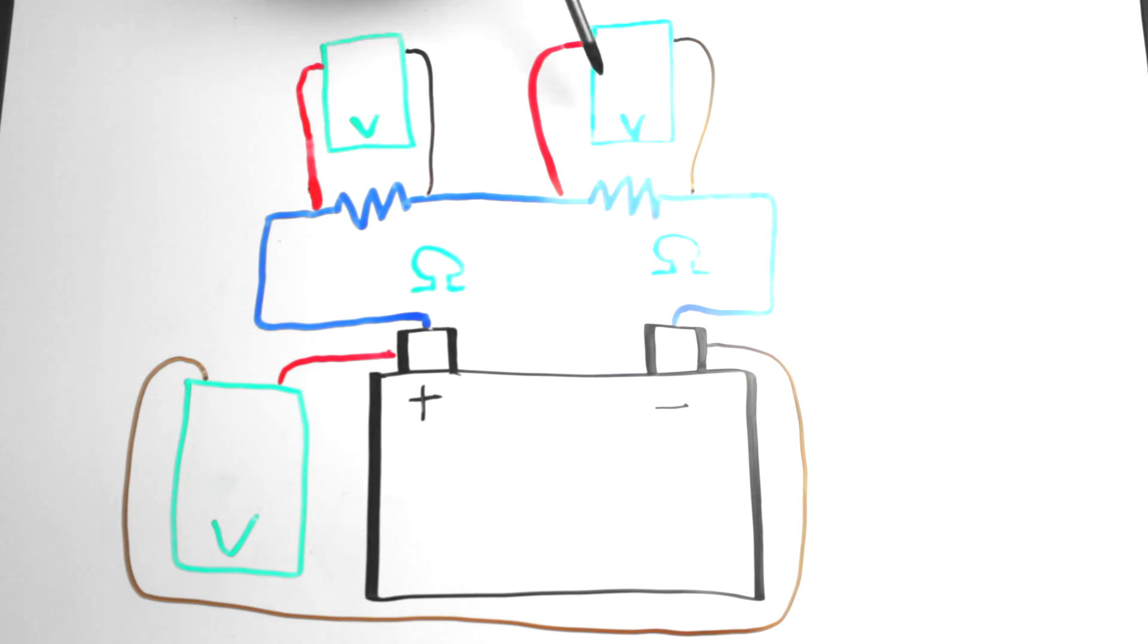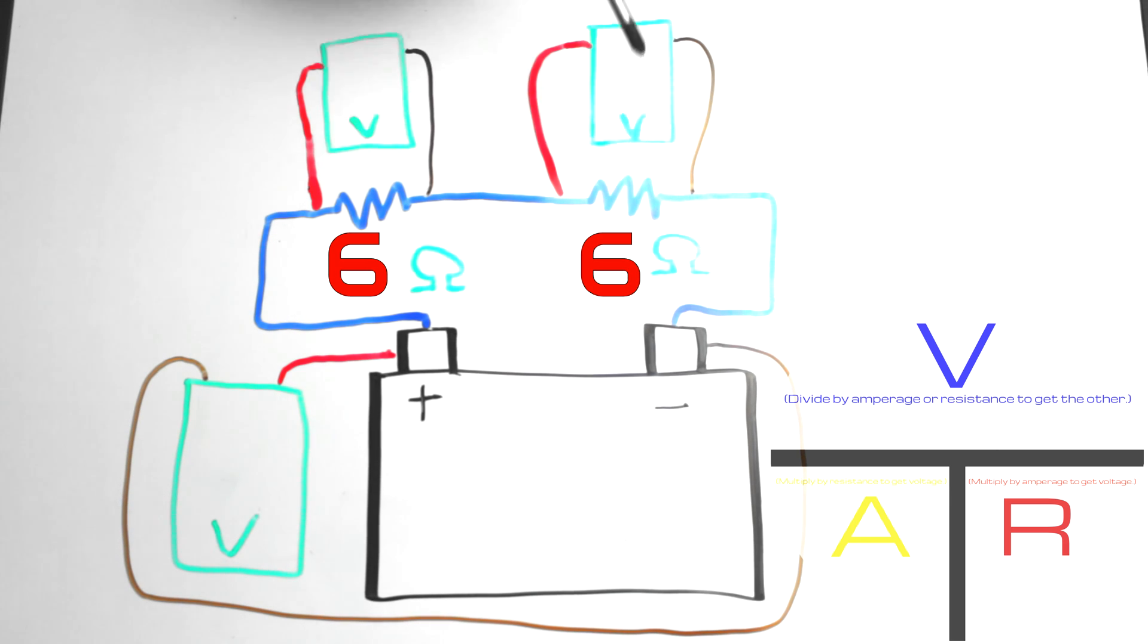So let's give our resistors a value. Let's say they are both 6 Ohms each. Since this is a series circuit and current flows through both resistors on its way through, you can treat both of these resistors like one by adding them both together. And 6 Ohms plus 6 Ohms equals 12 Ohms.